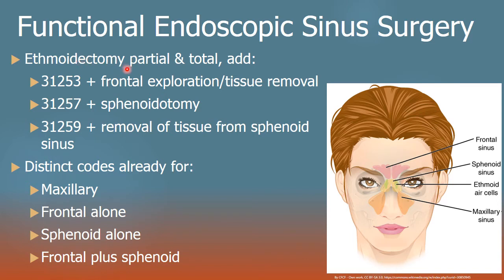So to summarize: ethmoidectomy total plus frontal exploration equals one add-on code. Ethmoidectomy total plus frontal exploration plus sphenoidotomy equals the next code. All three plus sphenoid tissue removal equals the third code. There are already distinct codes for each sinus done alone. The maxillary sinus has a separate approach and its own coding. There's also a frontal sinus surgery set separate from ethmoidectomy, and same with the sphenoid. Even a frontal-plus-sphenoid combination exists. It's a very robust environment in the FESS section of CPT — tread wisely and carefully.